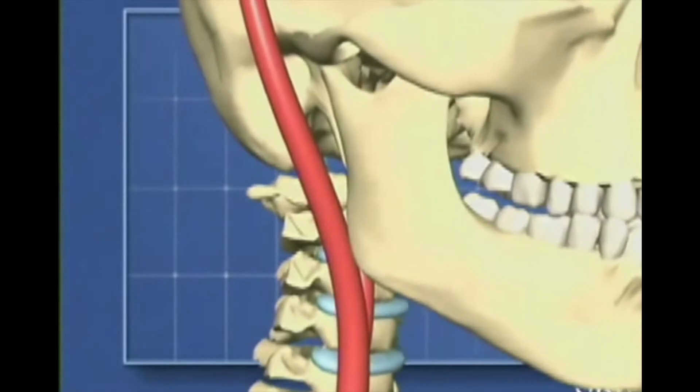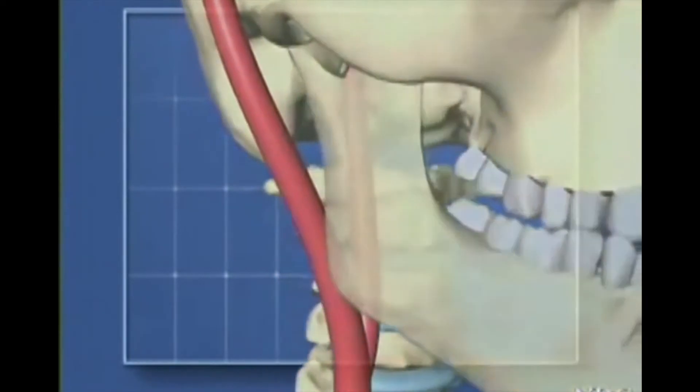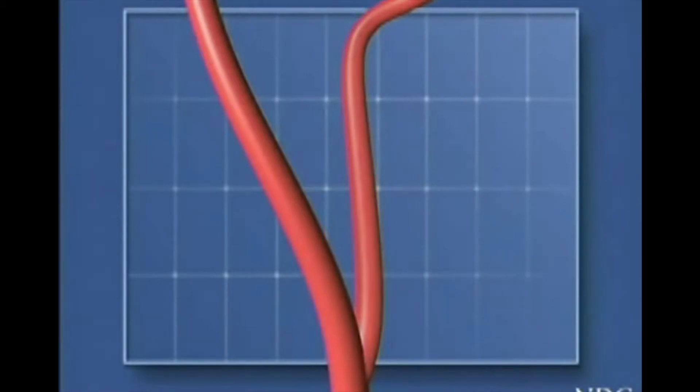The shape memory alloy used in this application is nitinol, which is a nickel titanium alloy. Nitinol stents have higher radial resistive force and flexibility when compared to traditional stents, which is important in increasing the likelihood of blood vessels to remain open.